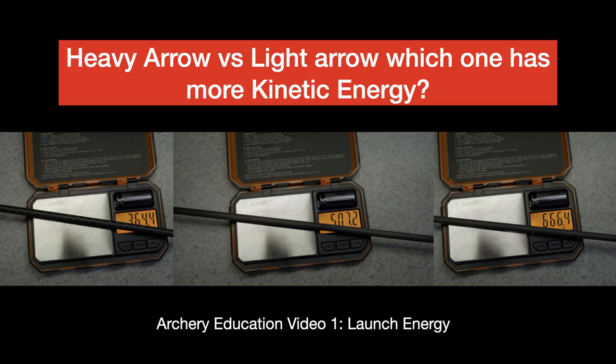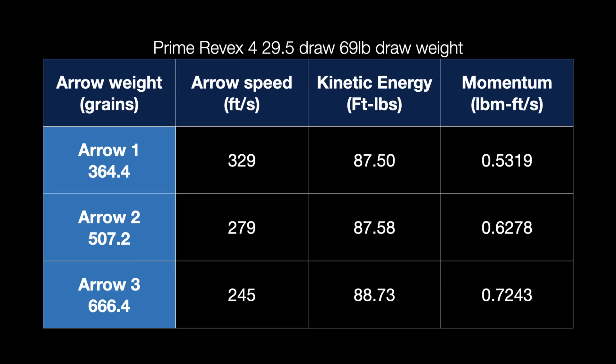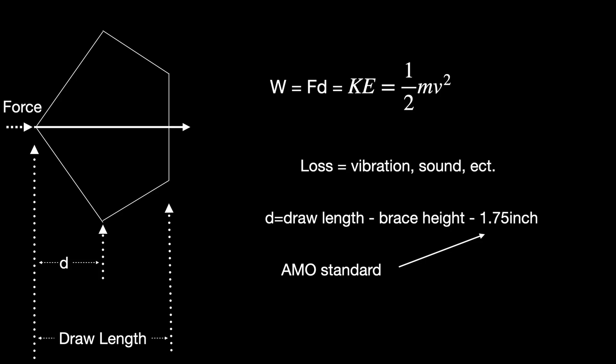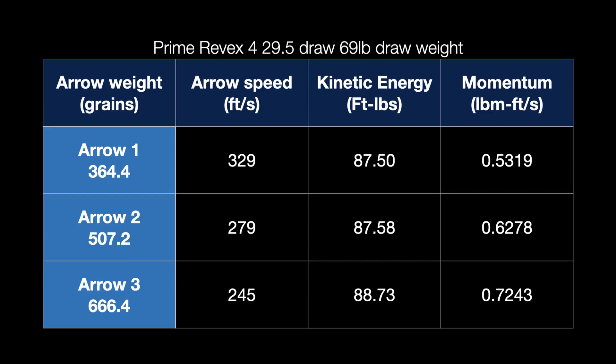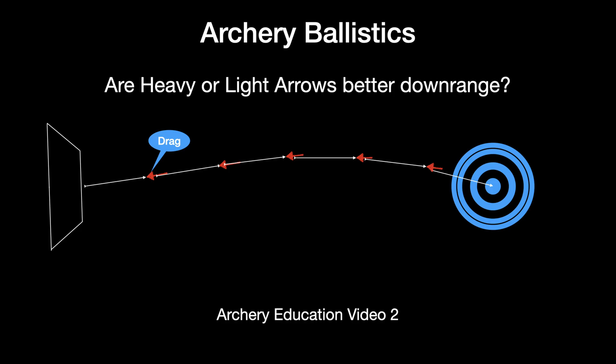We started this series off by talking about kinetic energy and momentum at the launch conditions — that means the arrow right as it comes out of the bow. What we discovered is that assuming the efficiency of your bow doesn't change, the energy of the arrow is not dependent upon anything of the arrow itself; it's just from your bow. That means you can shoot a 700 grain arrow or a 300 grain arrow and the kinetic energy as it leaves your bow should be the same.